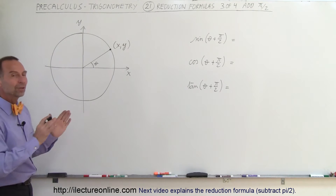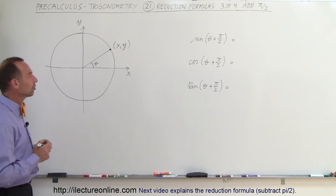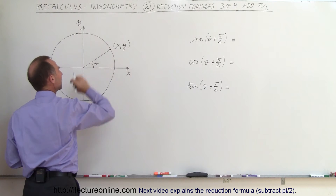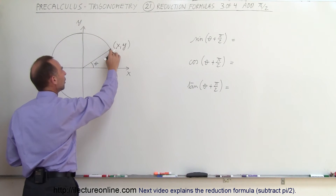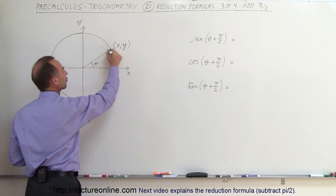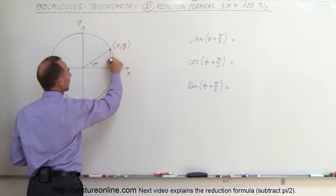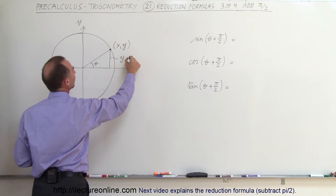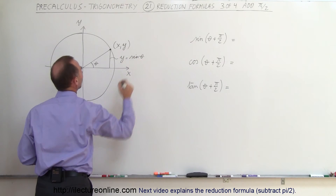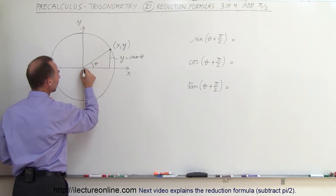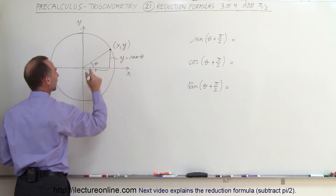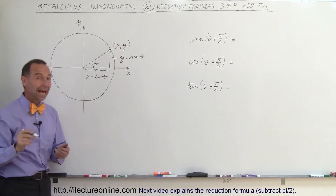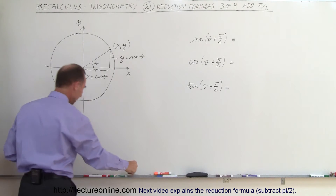Let's see how we can do that graphically first so we can get a better understanding of it. When we have a unit circle where the radius is equal to 1 and we have an angle theta here in the first quadrant, we get the value xy on the unit circle. This distance here is the y value, which is equal to the sine of theta, and this distance, the x value of that point, is equal to the cosine of theta.